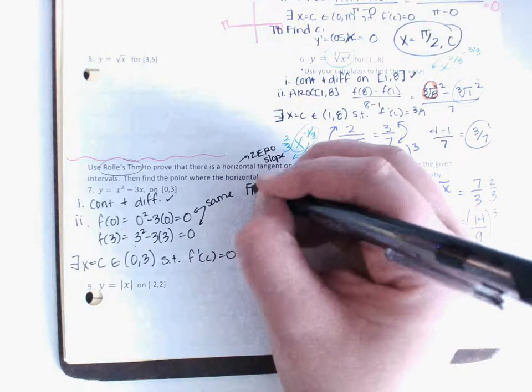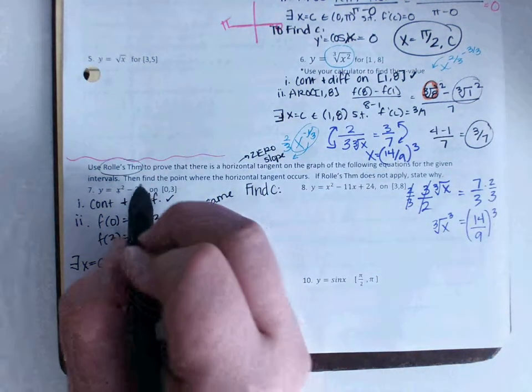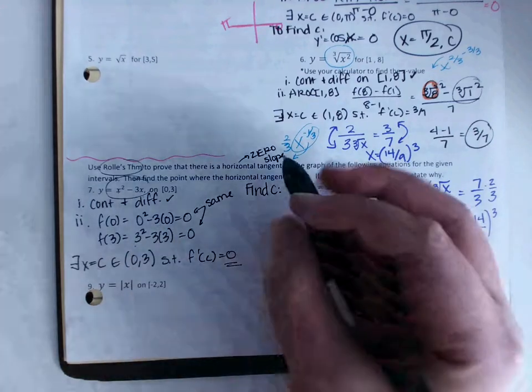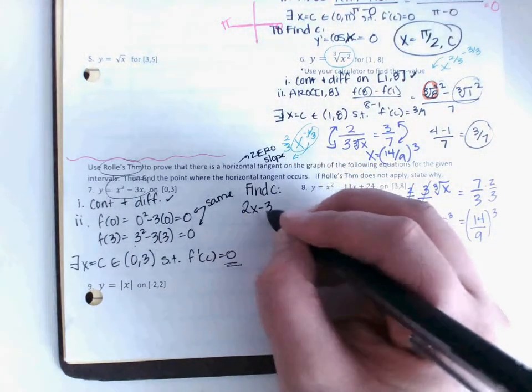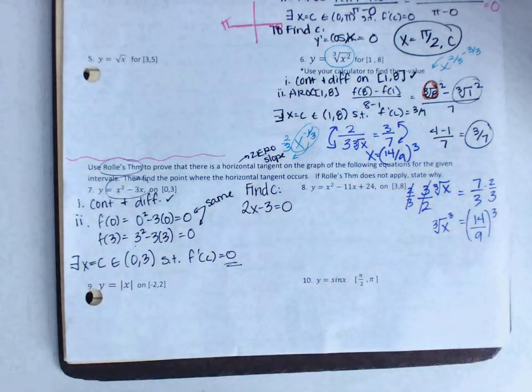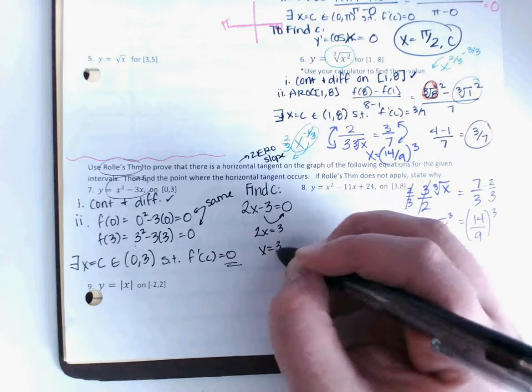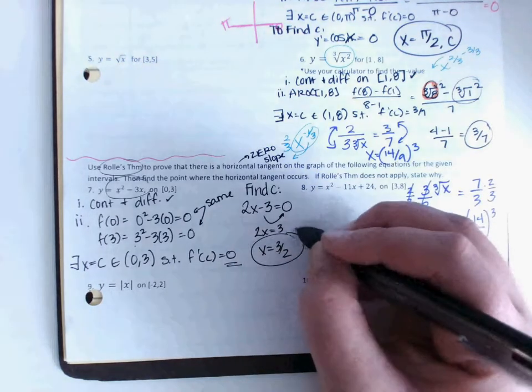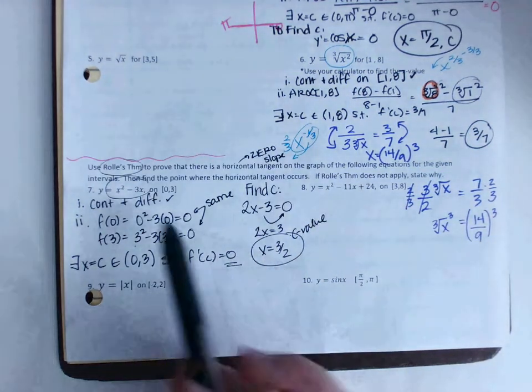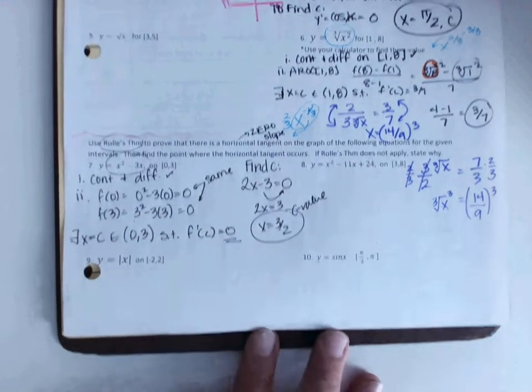Now, to find the c, I need to take the derivative and set it equal to 0. So my derivative here would be 2x minus 3, and I'm setting that equal to 0. Well, then if I add my 3 across, 2x is 3, then x is 3 halves, which is my c value. Now, also keep in mind, 3 halves, that does fit between 0 and 3, so that's good.